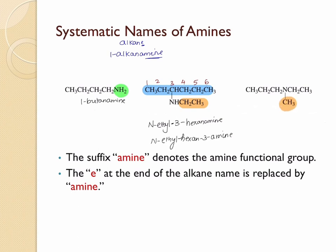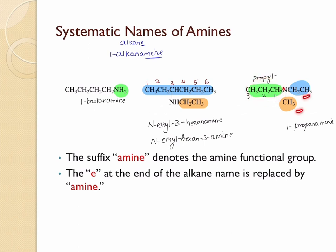In the next example, we have a methyl group, an ethyl group, and a propyl group. The propyl group has the longest chain, so the parent name is propanamine. The nitrogen is attached to carbon number one, so this is 1-propanamine. The two additional groups attached to nitrogen are an ethyl and a methyl, making this N-ethyl-N-methyl-1-propanamine.